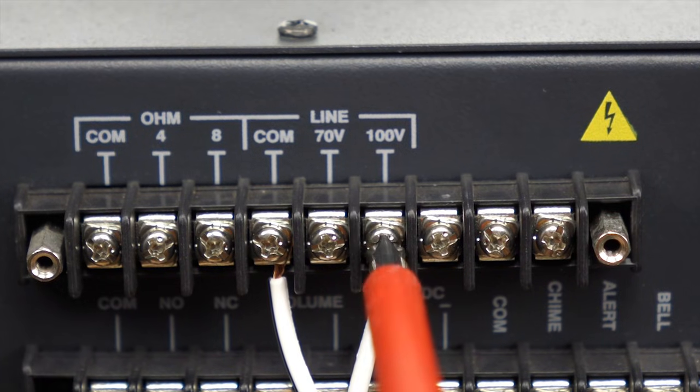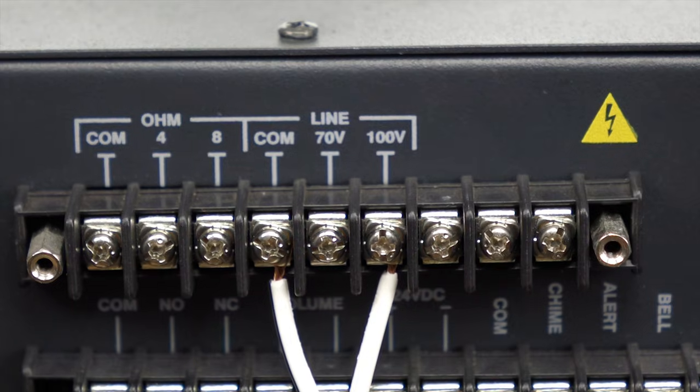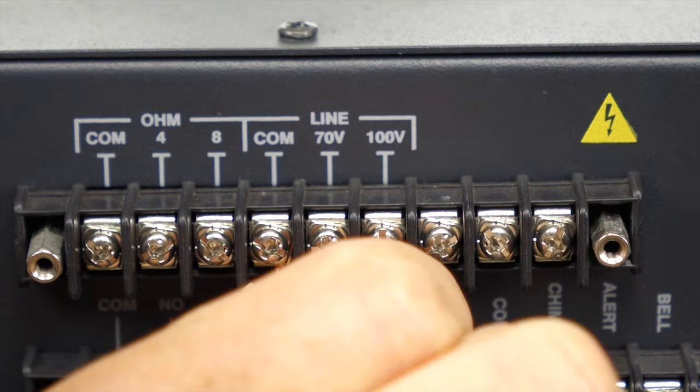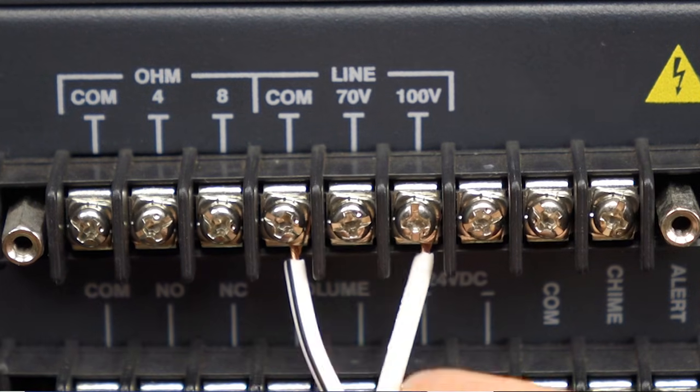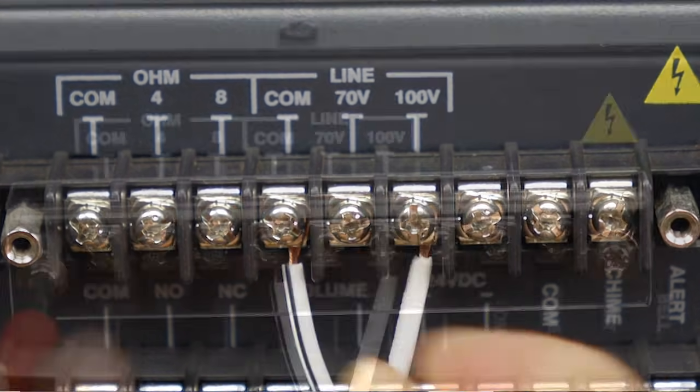Now if you've chosen a 70 volt speaker, the principle is exactly the same. Take the trace cable and connect it to the common terminal and the other wire to the 70 volt output.